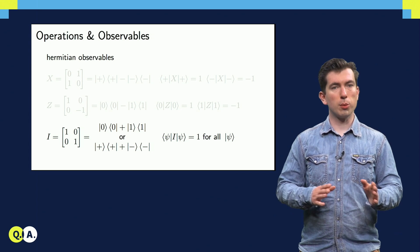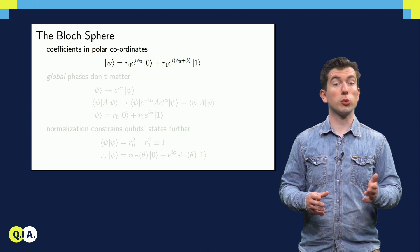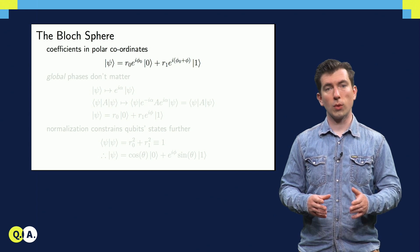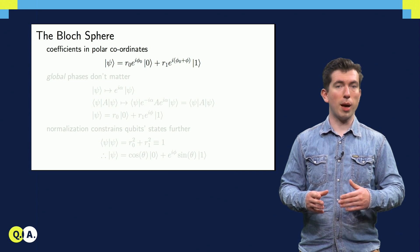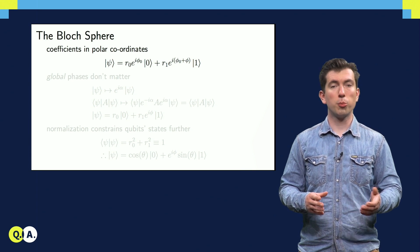Now that we have a few examples done, I'd like to focus a little on a useful geometric representation of qubit states, called the Bloch sphere. To show how qubit states can be mapped to the surface of a sphere, let's start by expressing the coefficients alpha and beta in polar coordinates.